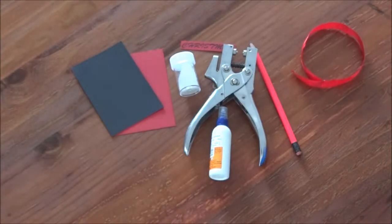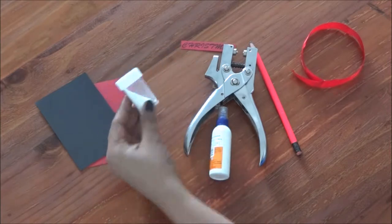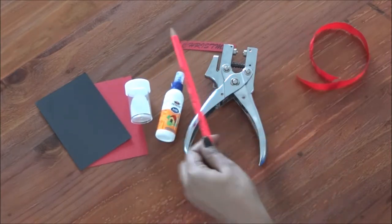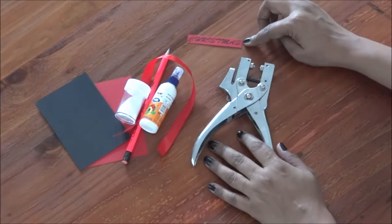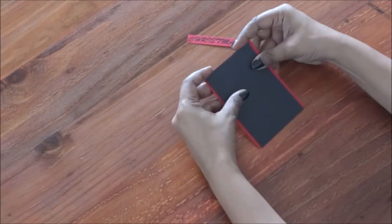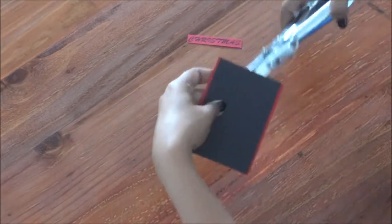Hello everyone, sharing a new gift tag tutorial. Cardstock, glitter, adhesive, pencil, ribbon, punch, and note tag. So we'll be making a quick, easy Christmas gift tag. Just take two small pieces of cardstock, red and black. Punch a hole at the center on the top to tie the ribbon.